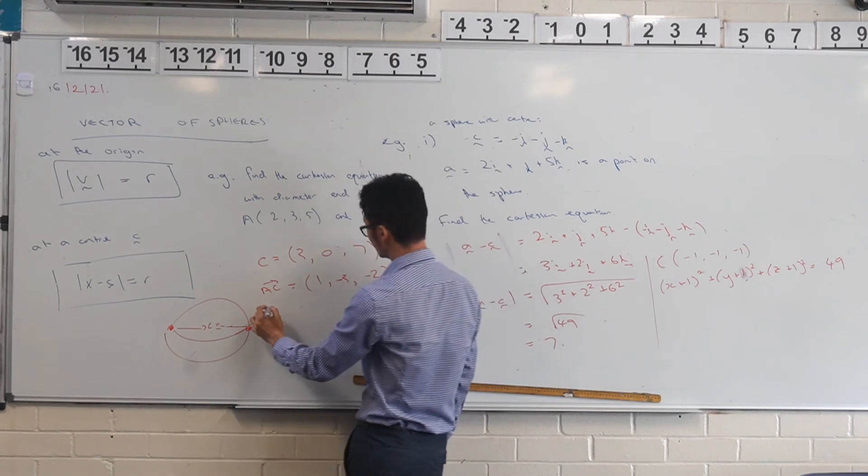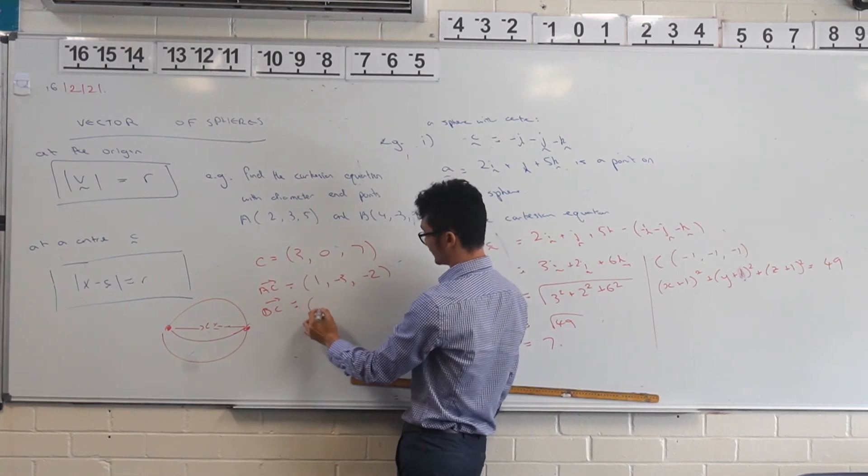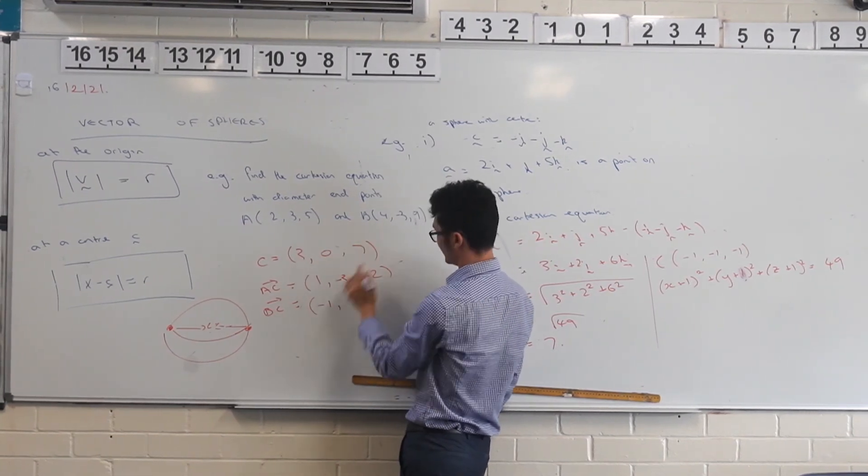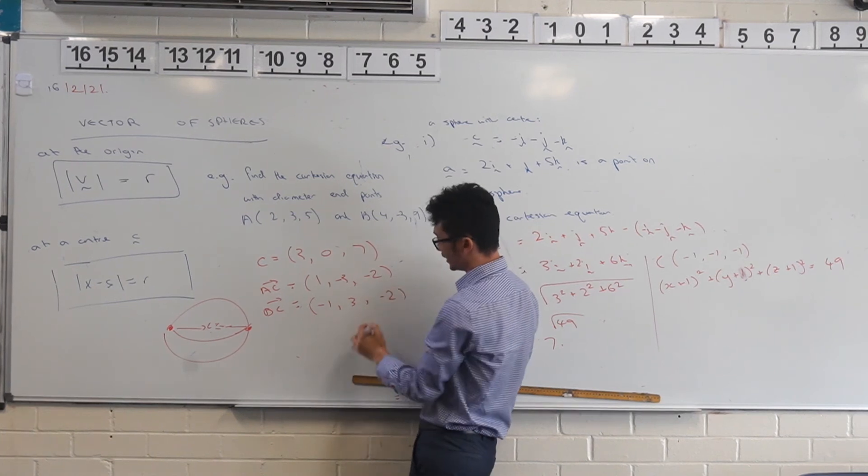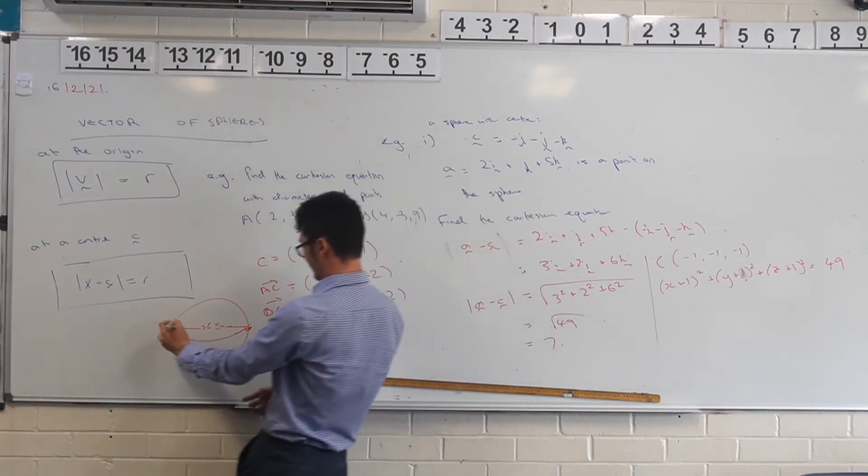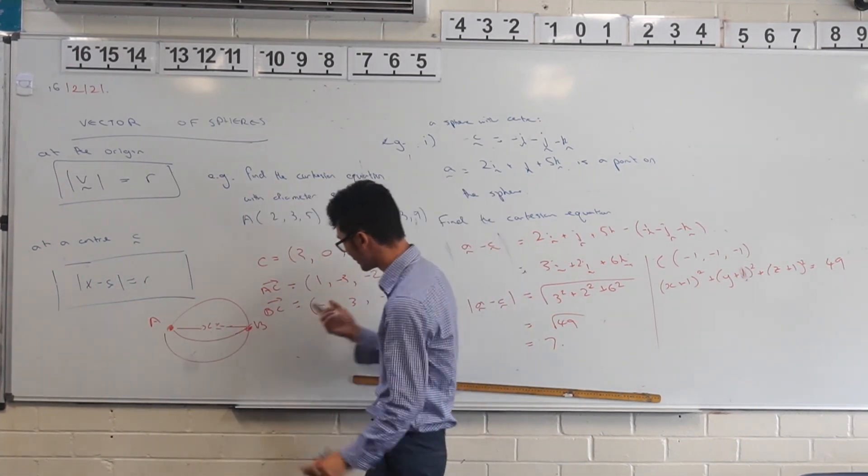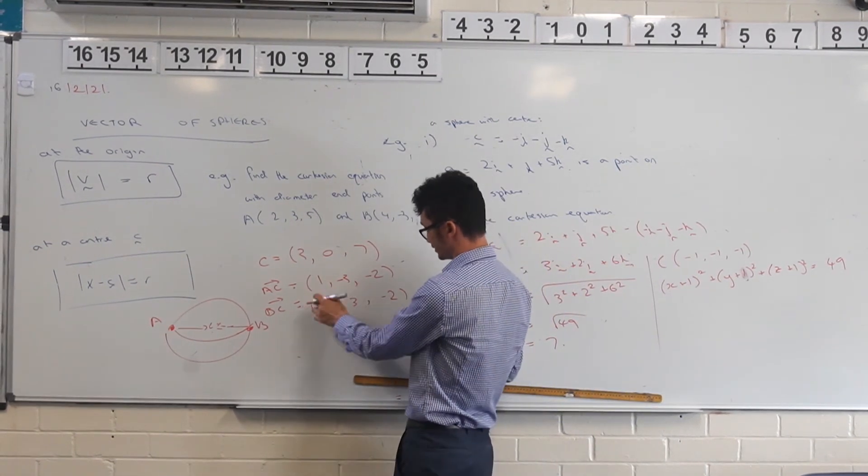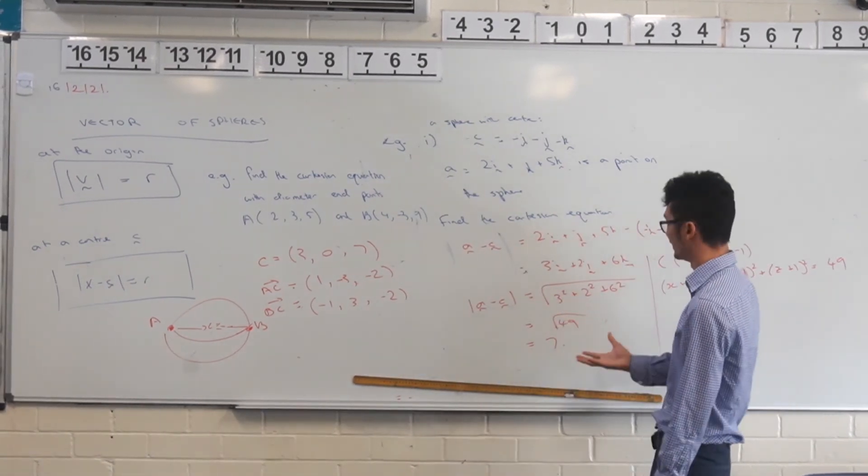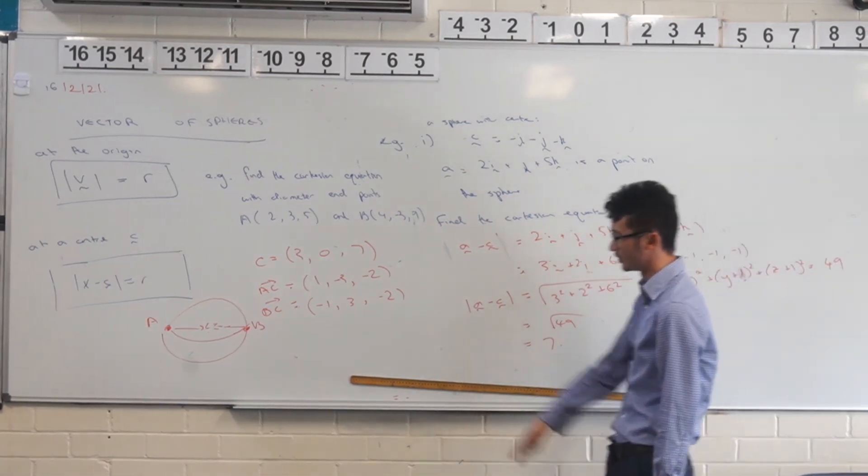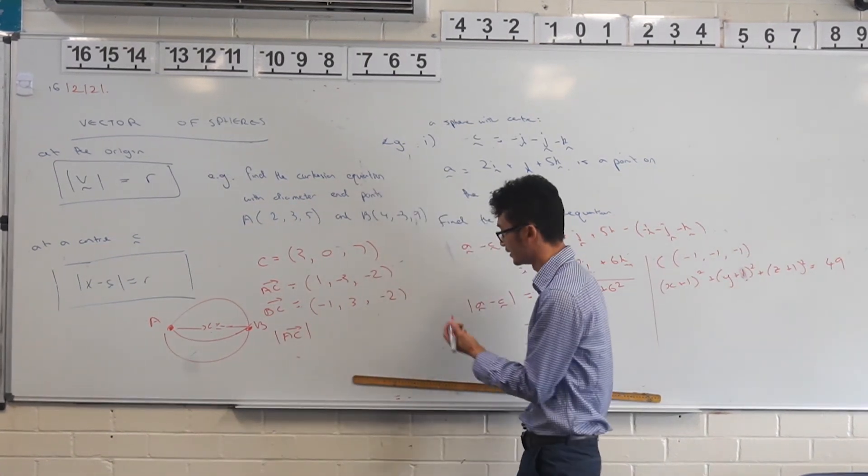And just to check, if I was to use BC, I should, fingers crossed, get the same thing. So 3 take away 4, negative 1, 0 take away positive 3 is negative 3, and then 7 take away 9, negative 2. And the reason why I've got a negative there is because I've got, let's say A and B here. These two, if I look at them, they're pointing actually in opposite directions. So in that sense, that's why I've got this is the negative scaled version of this one here. They're just pointing in opposite directions. But actually it doesn't really matter because why did we even want this? We're actually interested in the magnitude. So either way, the magnitudes of both of these is going to be the same. I just wanted to do that just to highlight that. It doesn't matter which one you pick.